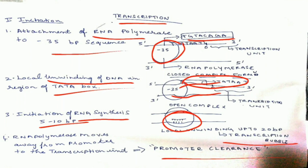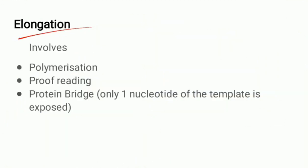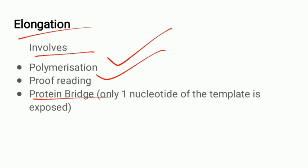To summarize initiation: the RNA polymerase first attaches to the minus-35 base pair sequence, then unwinds at the TATA box, then synthesizes 5 to 10 base pairs of RNA, and then moves away from the promoter. Elongation involves polymerization, proofreading, and the protein bridge. Polymerization is the continuous addition of nucleotides through 3' to 5' phosphodiester bonds.